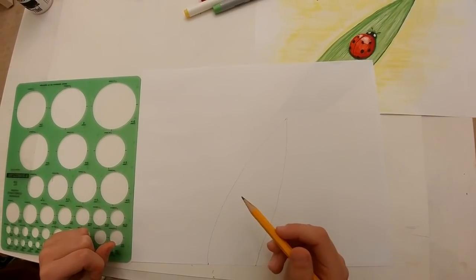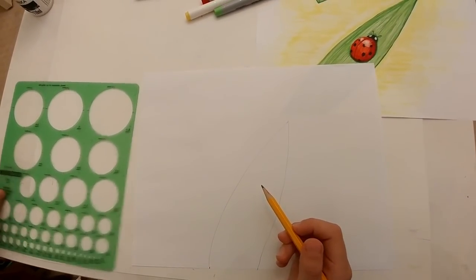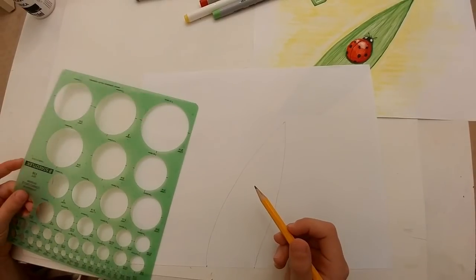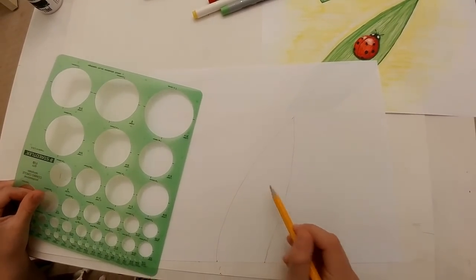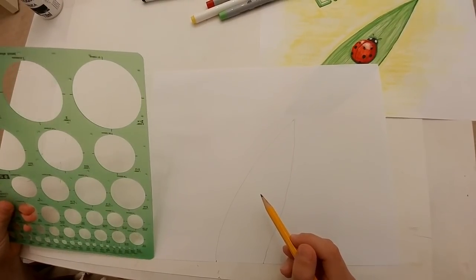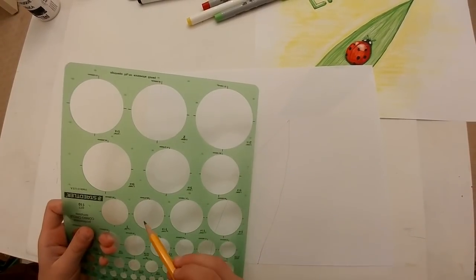Now let's put a ladybug on our leaf. You can use a small glass, a jar, or a little coin to draw the ladybug. I'm going to use the circle medium size.